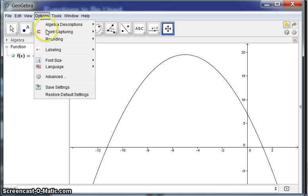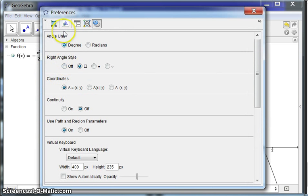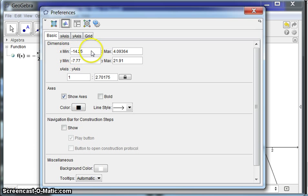You go to Options, Advanced, and this little icon up here, you can see what pops up there is Preference for Graphics. And now you can see you have x-min, x-max, y-min, y-max, and you can set those just like you do with a graphing calculator.